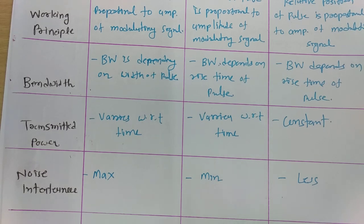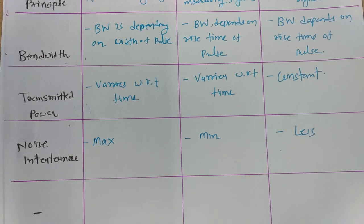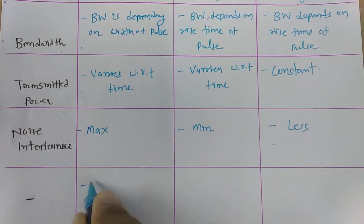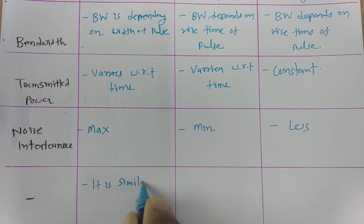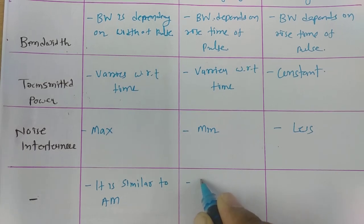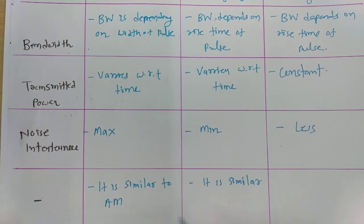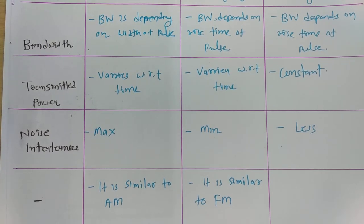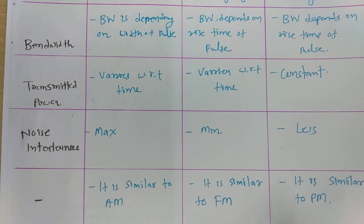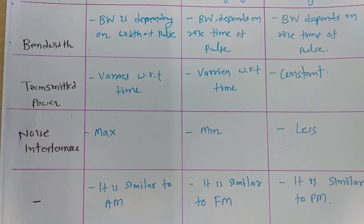When we compare these three techniques to analog modulation: Pulse Amplitude Modulation is comparable to AM (Amplitude Modulation) in analog modulation. Pulse Width Modulation is similar to FM (Frequency Modulation) in analog modulation. And Pulse Position Modulation is also analogous to FM modulation in analog modulation.